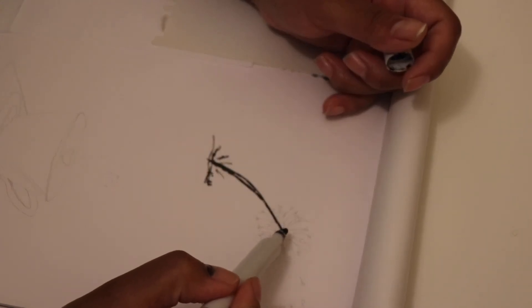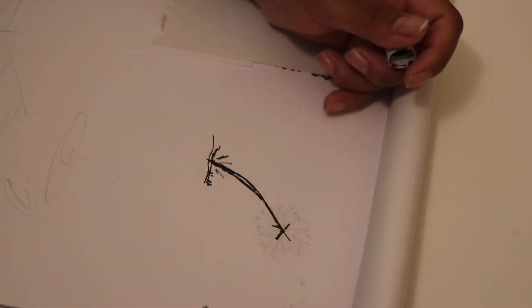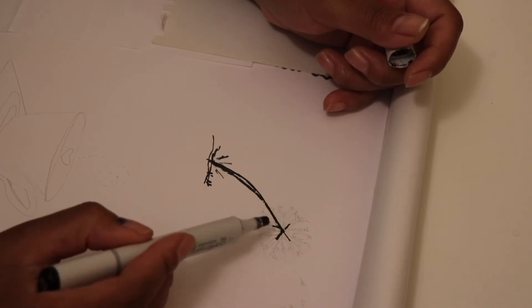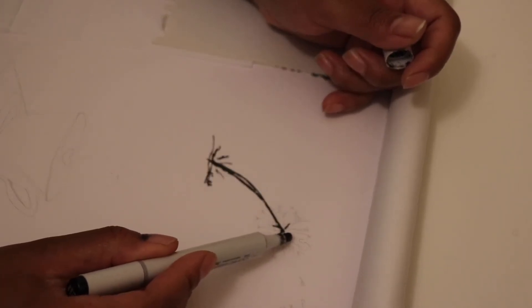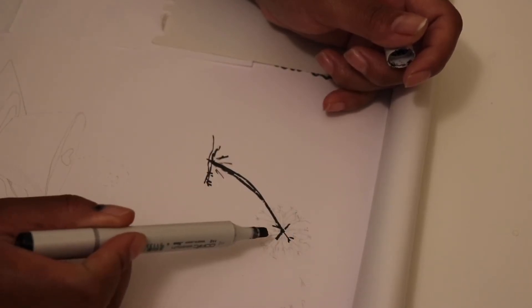Now at the end of that dot, you want to make four corners like this. Just like that. On the end of those corners, you want to make three tiny little arms, just like that.